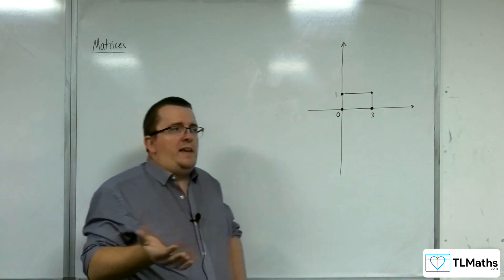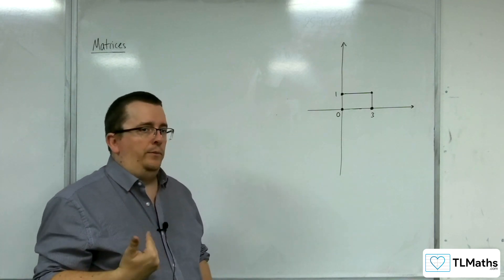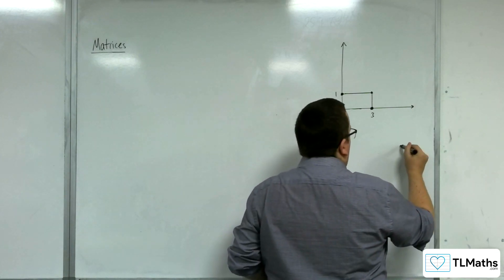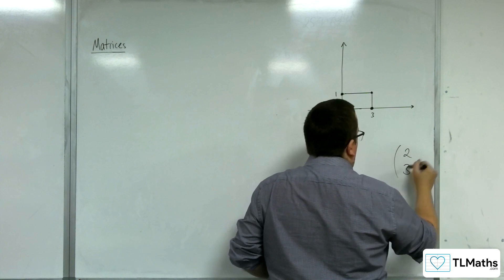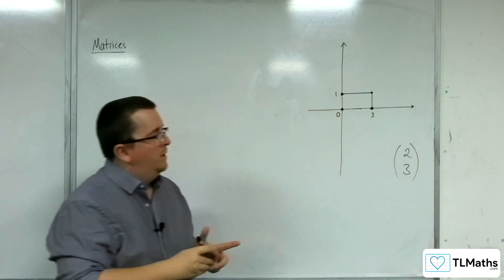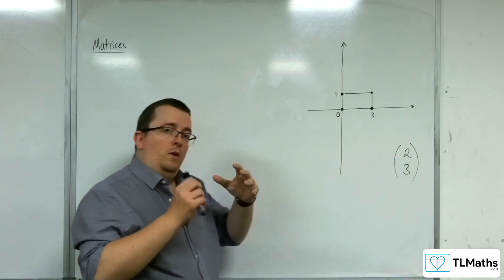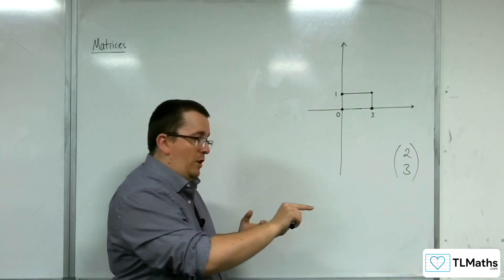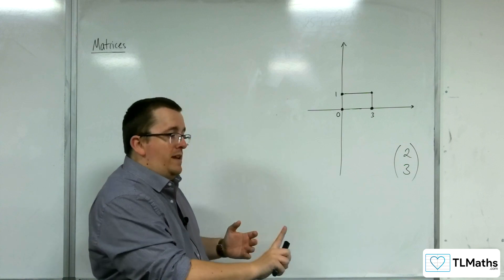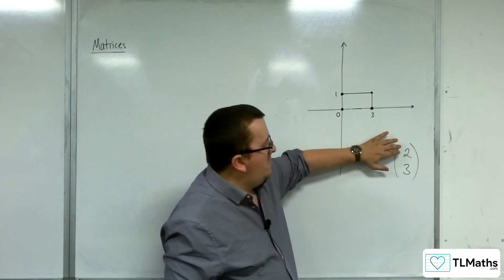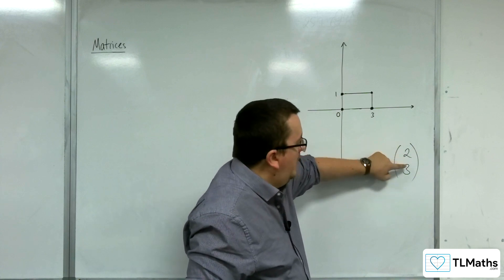Now, you will have seen with vectors that a vector can be represented so that something like this, for example, where the 2 represents 2 going along in the x direction, positive x direction, and 3 going in the positive y direction. So we recognize that this is x and this is y.